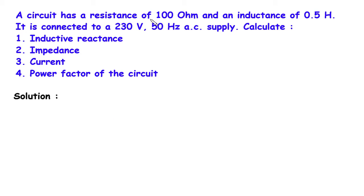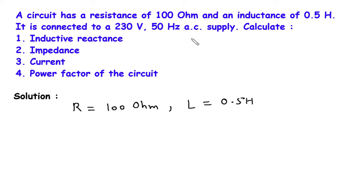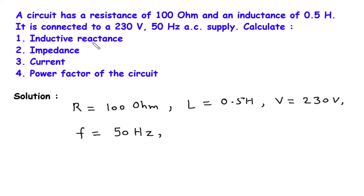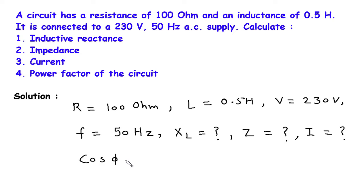Solution. First we will write what is given. Resistance R is equal to 100 ohm and inductance L is equal to 0.5 henry. Voltage V is equal to 230 volt and frequency F is equal to 50 hertz. We have to find: inductive reactance XL, impedance Z, current I, and power factor cos phi.